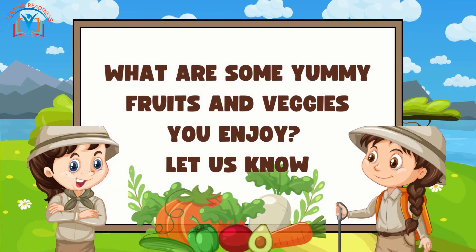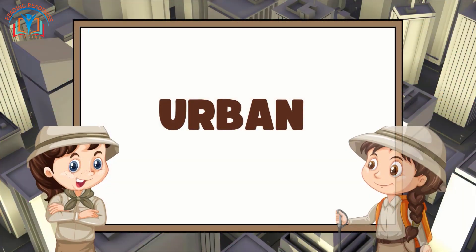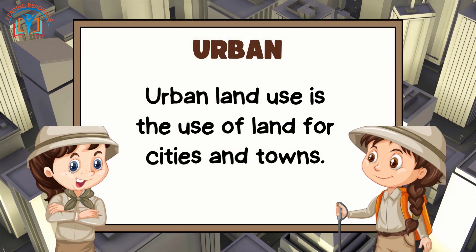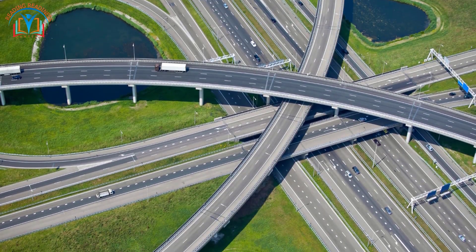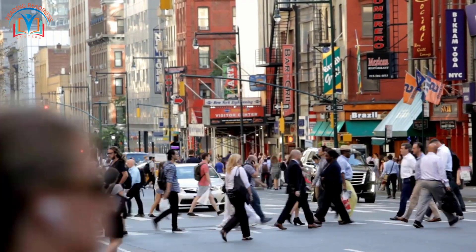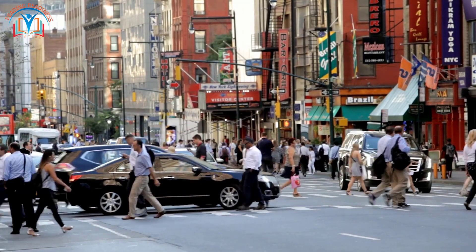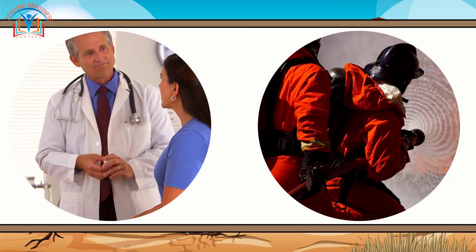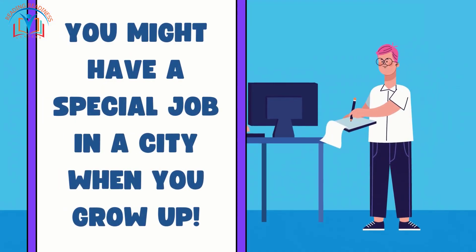What are some yummy fruits and veggies you enjoy? Let us know! Urban land use is the use of land for cities and towns. This can include homes, businesses, schools, and roads — tall buildings, busy streets, and people on the go. Cities are like giant playgrounds where people live, work, and have fun. From doctors to firefighters to teachers, everyone has a role in making a city run smoothly. And guess what? You might have a special job in a city when you grow up!